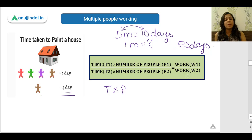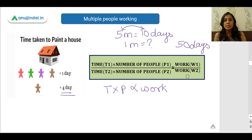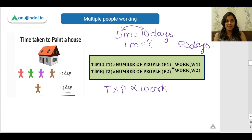There is a formula which states that the time taken and the number of laborers working is directly proportional to the work that they do. We are going to use this formula and you will understand what it means as we work through the questions.